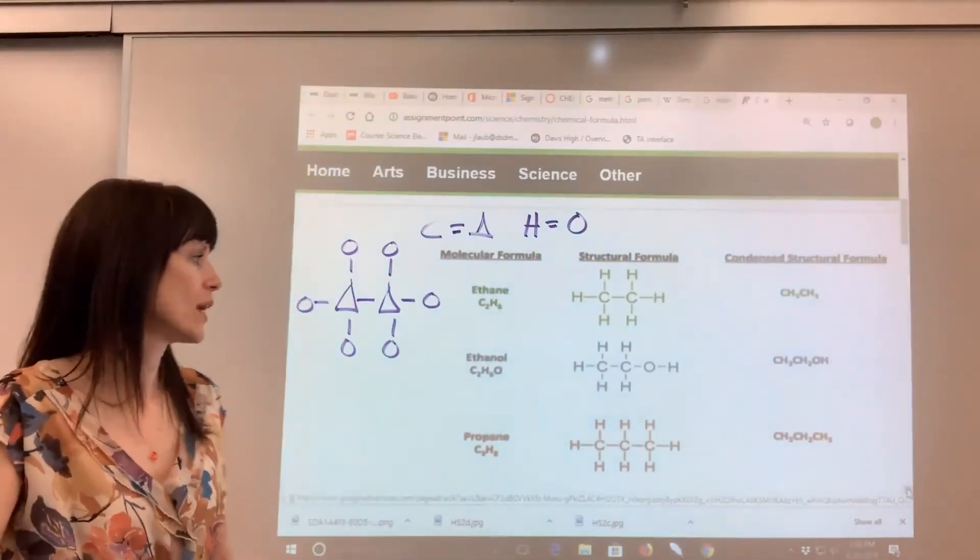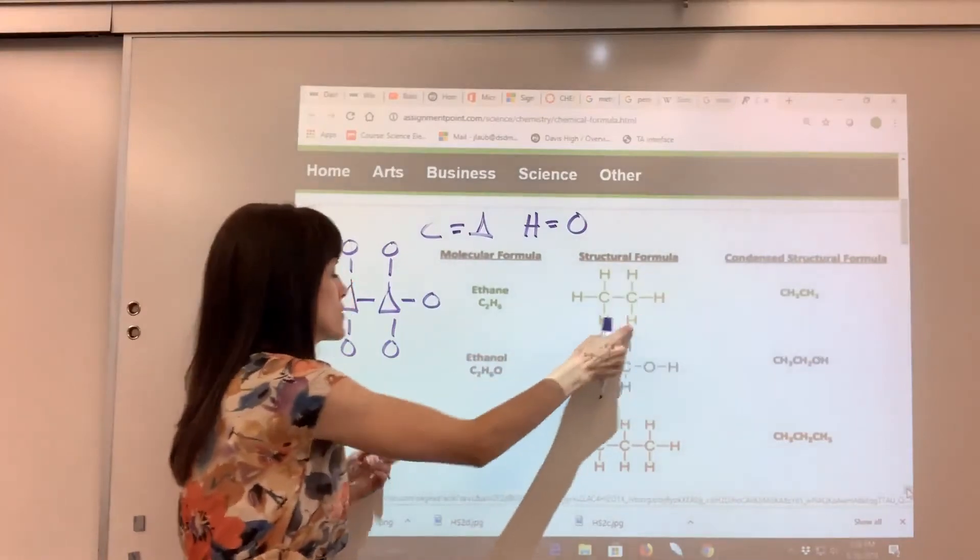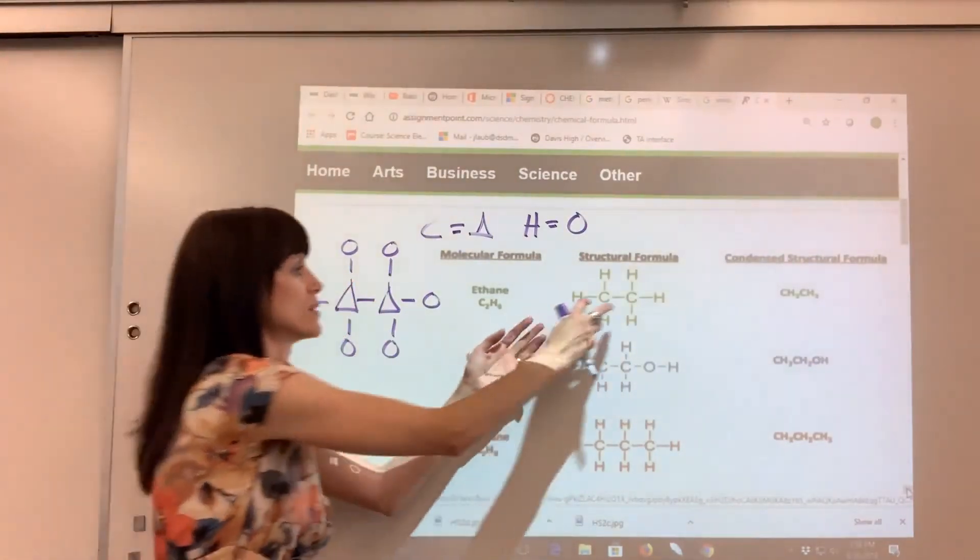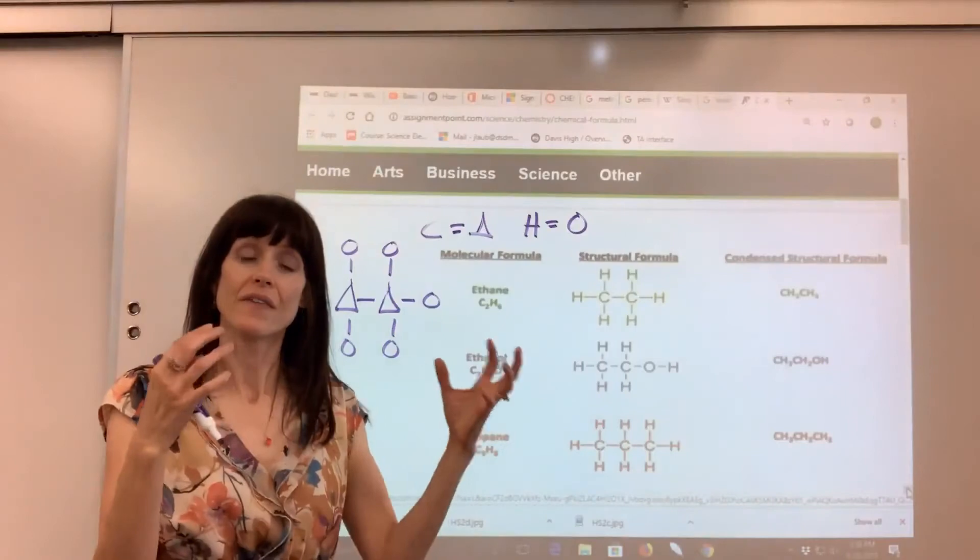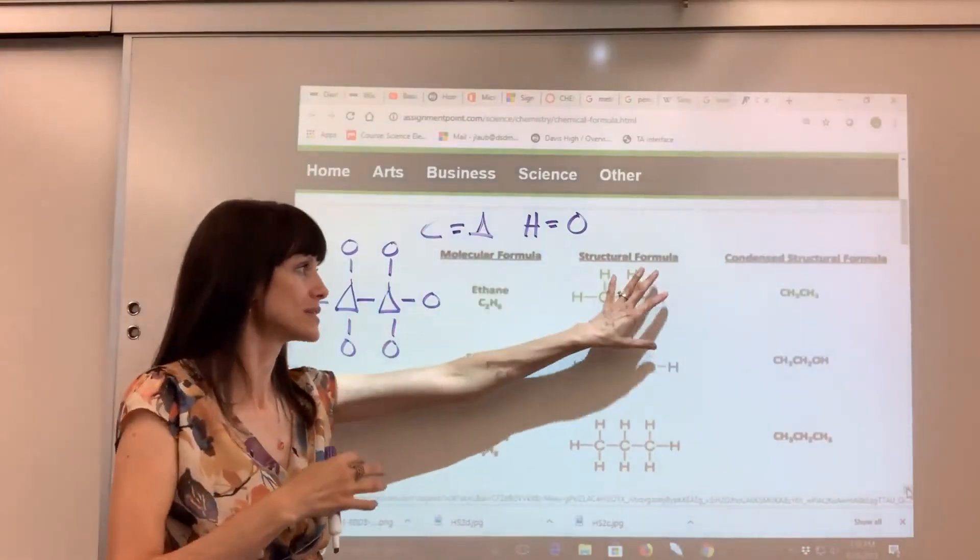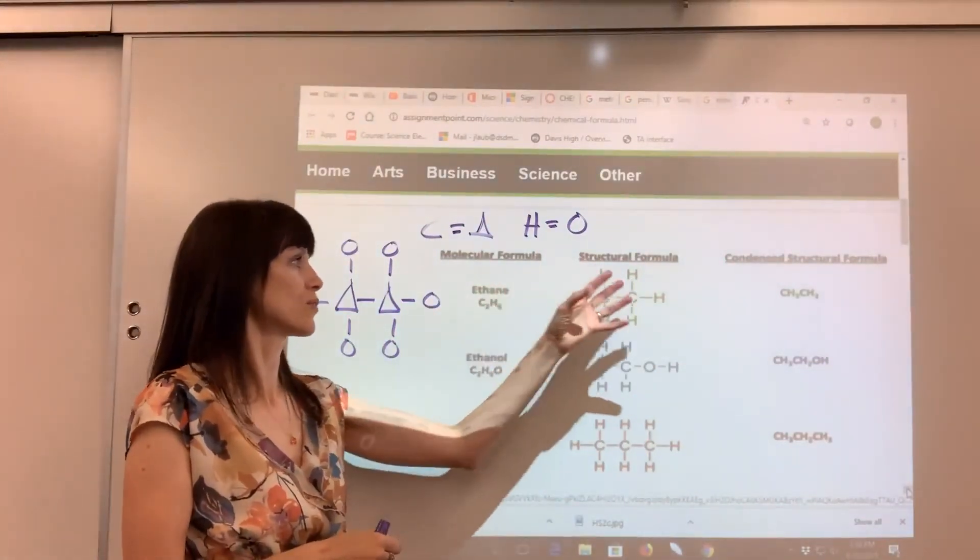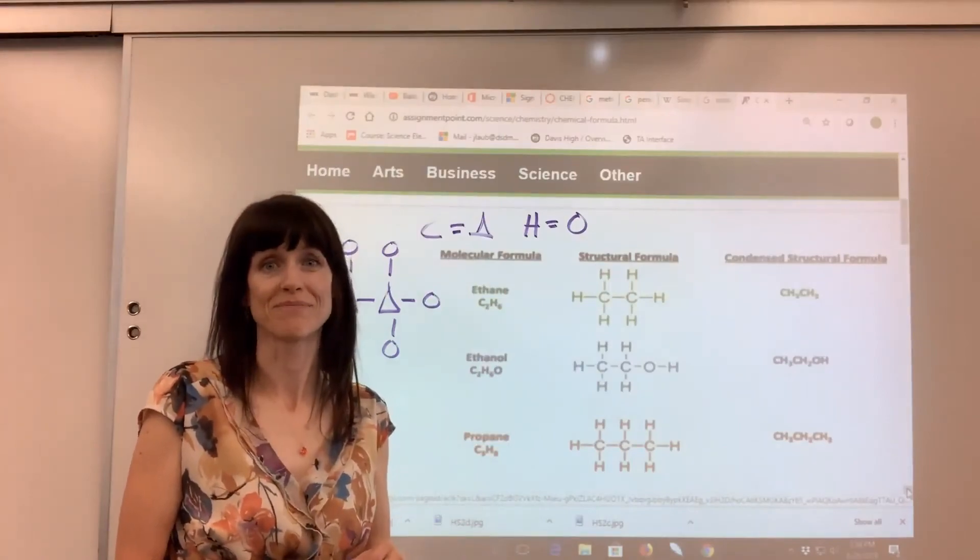And you're balancing between reactants and products. So just word of warning, you have to make sure that I've got six hydrogens, I've got my six circles, I've got two carbons, I've got those two triangles, that they match up. The model represents that molecular formula and the structural formula. Thank you.